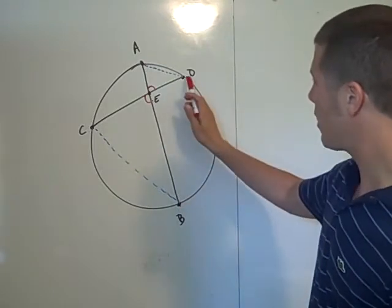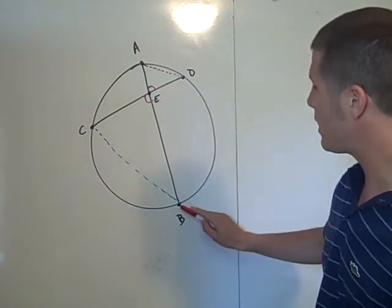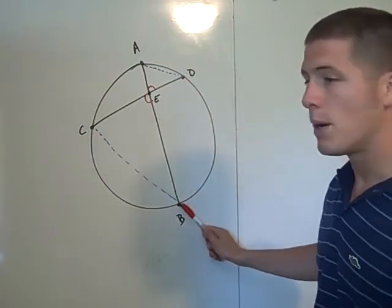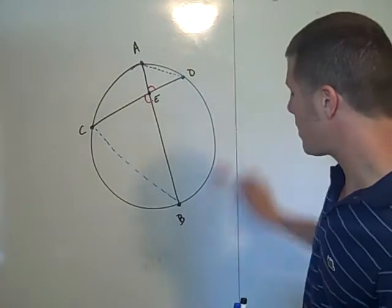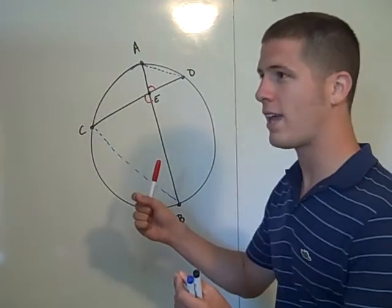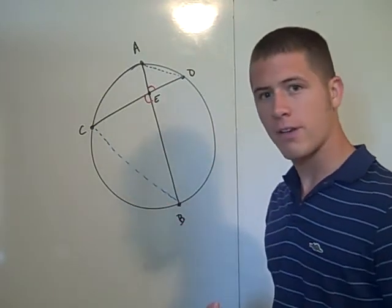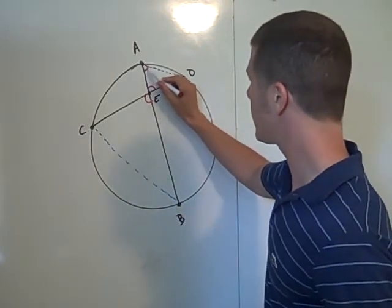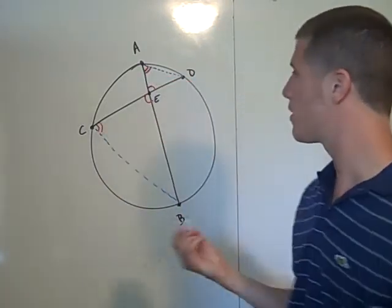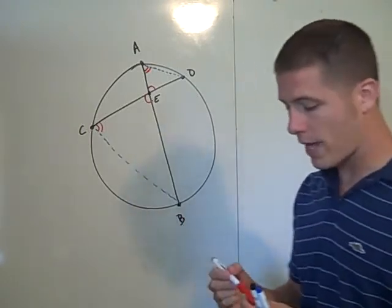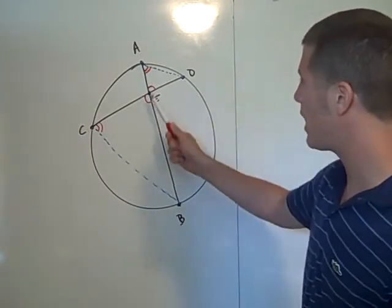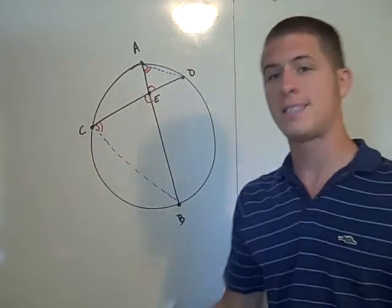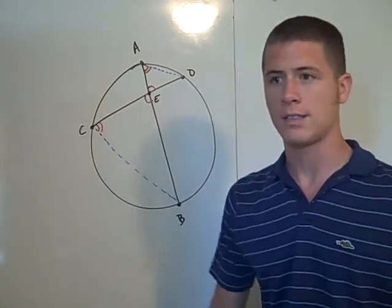Well, if angle DAB and angle DCB both intercept the arc DB, then both angles must be half the measure of DB. And so both angles have the same measure. They're congruent. Well, that's good because now we have that these two triangles, triangle AED and triangle CEB, are similar by angle-angle similarity.